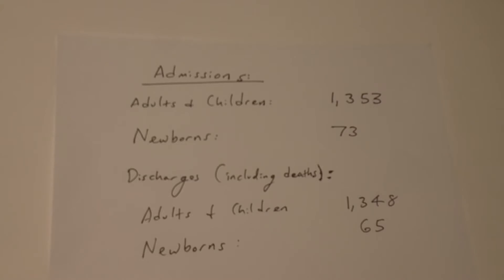You have admissions of adults and children of 1,353 and you have 73 births during the month of August. Also, during the month of August, you have the following discharges including deaths. Adults and children, 1,348. Newborns, 65.